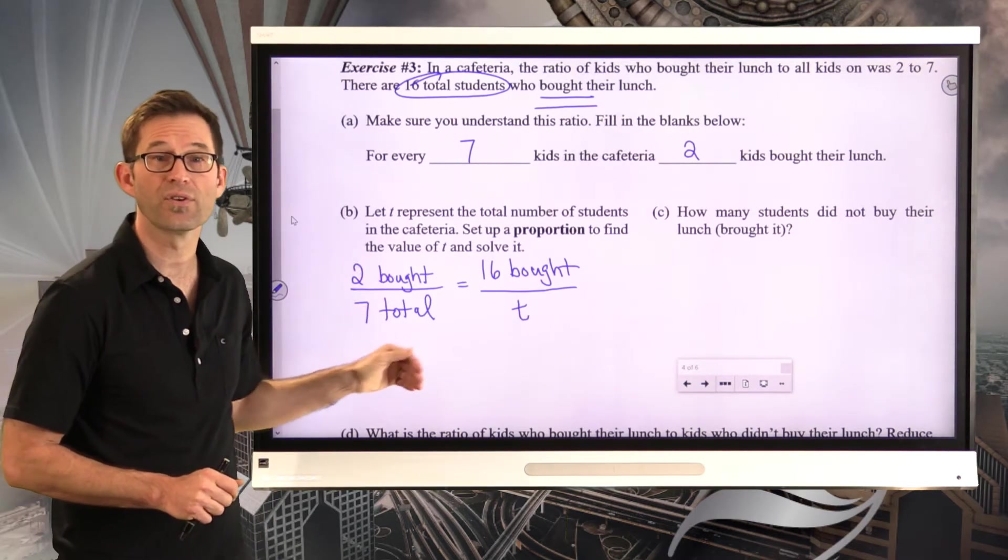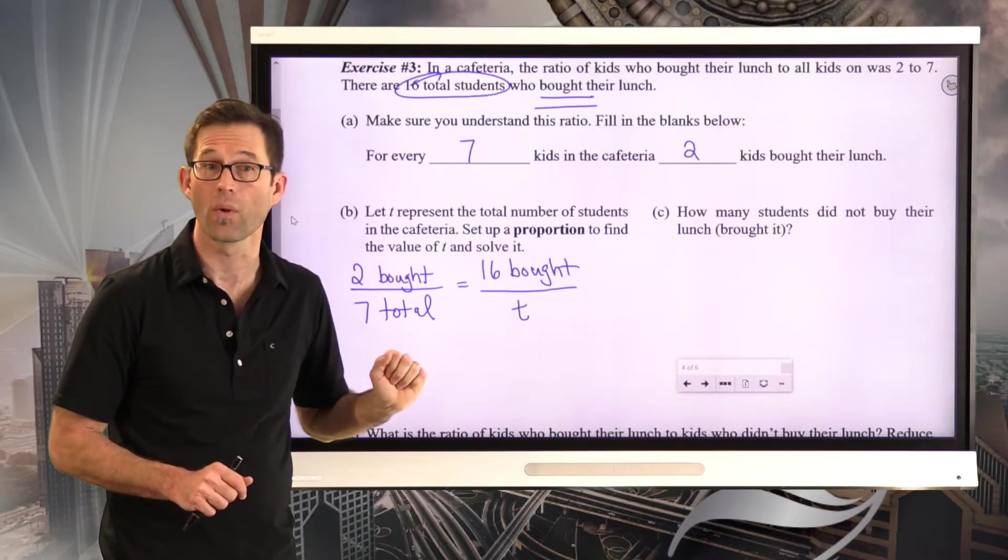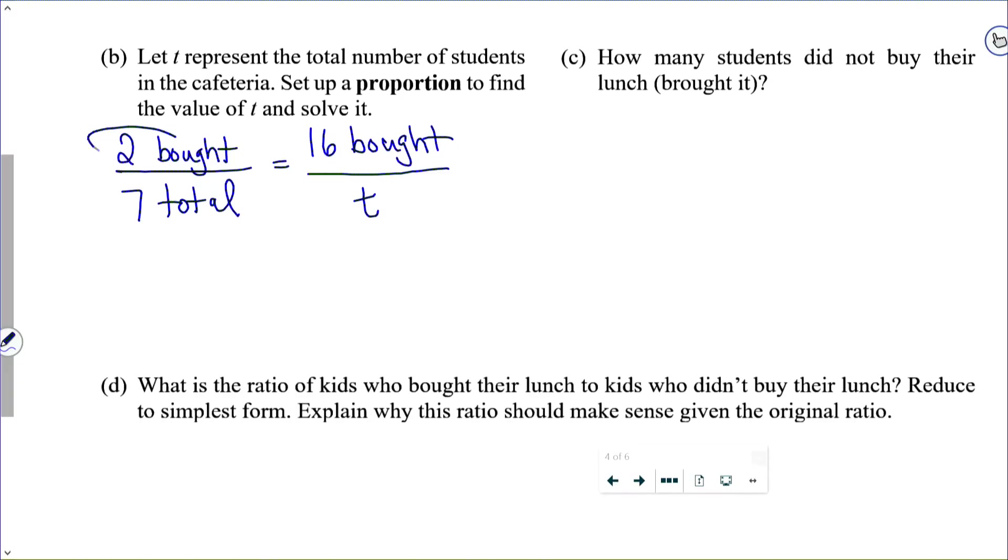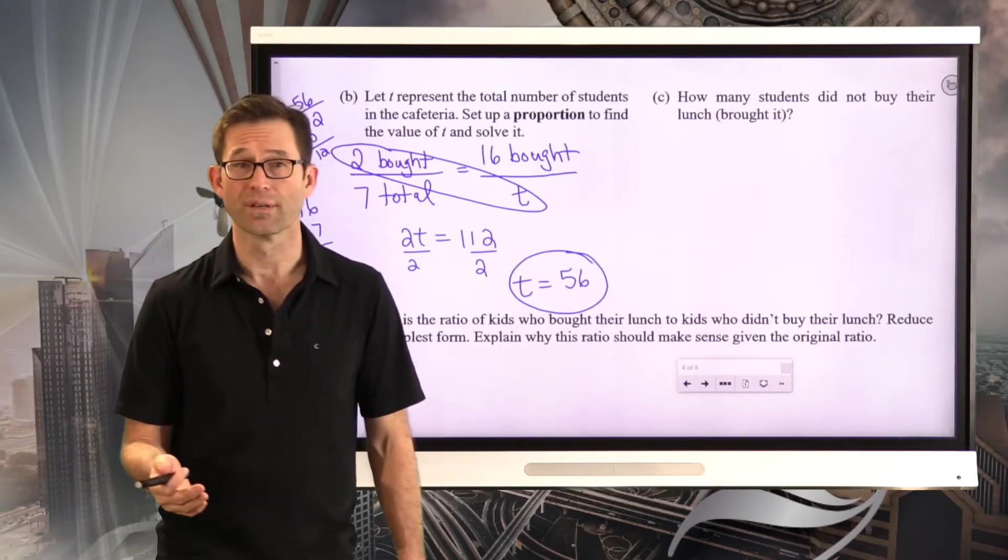What we know is we know that for every 2 that bought, there were 7 total. Now, we were told that there were a total of 16 students who bought their lunch. So 16 bought, and what we want to find is the total. So here's our proportion. 2 bought to 7 total equals 16 bought to T total. Now what we're going to do is we're going to do a little cross multiplication. 2 times T is 2T. 7 times 16 is 112. And now we'll divide both sides by 2, and we find T equals 56. So there are a total of 56 students.